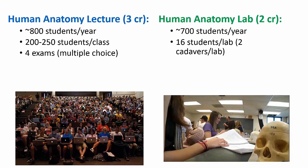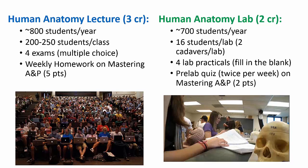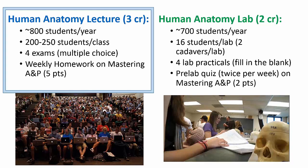Historically in lecture, we assessed students on four exams — three midterms and a final — and in lab we used four standard practicals with labeled structures and about a minute per station. After years of students asking for more, we finally moved to weekly homeworks, and this is where Mastering A&P has become most useful. In lecture, homework is due every Monday evening at 11 p.m., and in lab we've added twice-weekly quizzes students must complete before attending each lab.